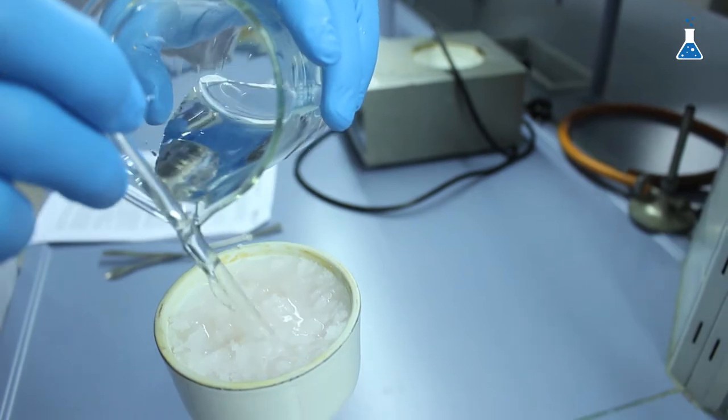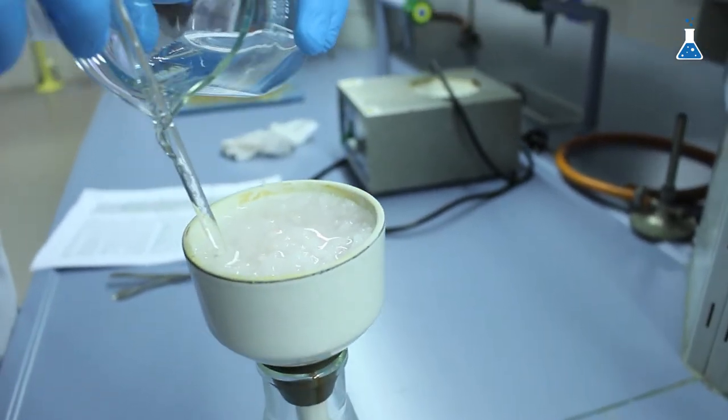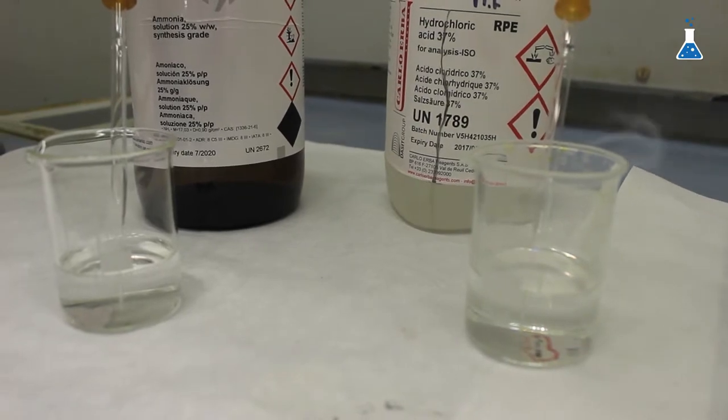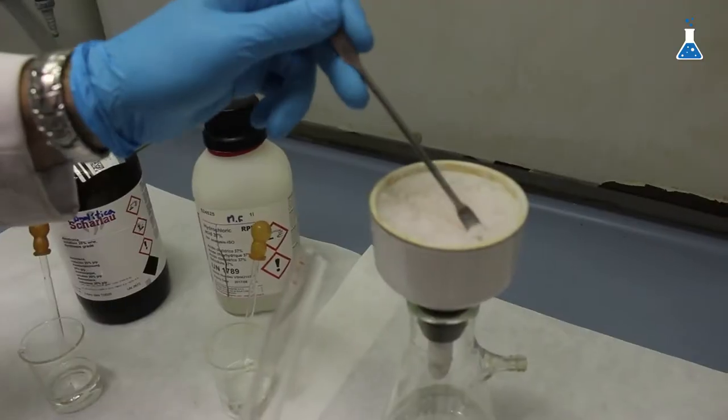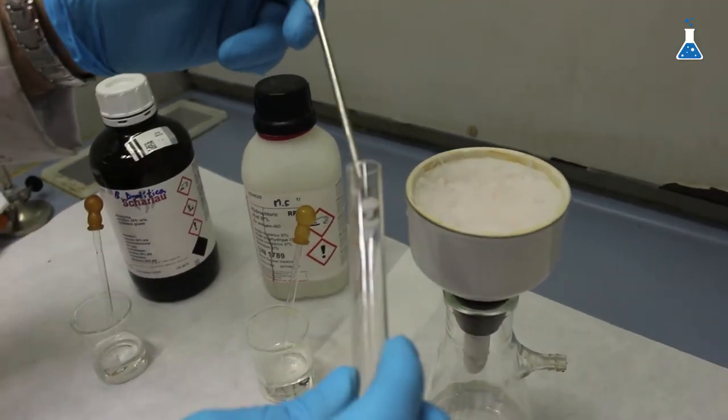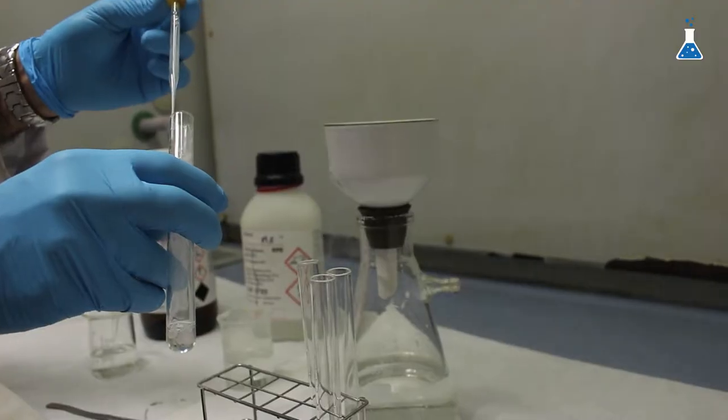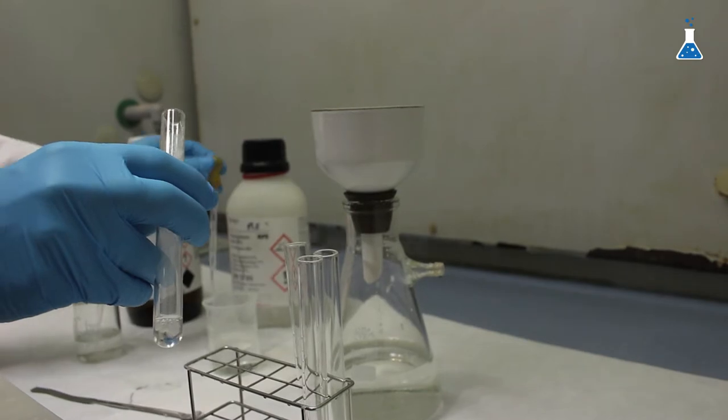The white solid is then washed with a small amount of water and we are going to test its amphoteric behavior. Let's put a tiny amount of the oxide in two different test tubes. And now we are going to check its reaction with acid and base.